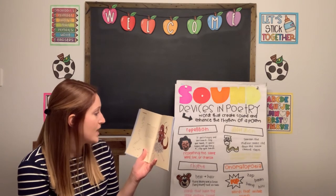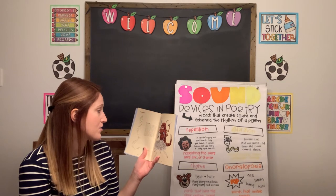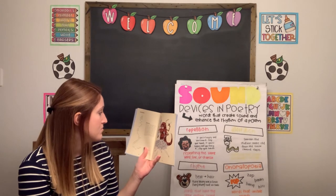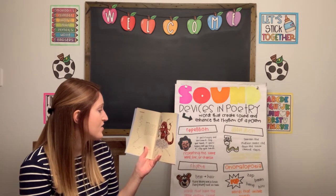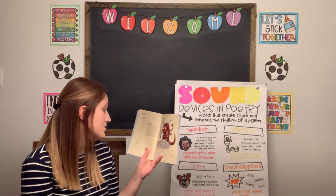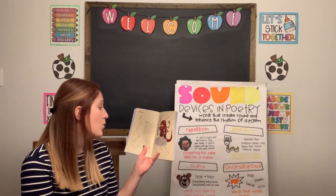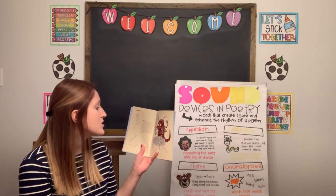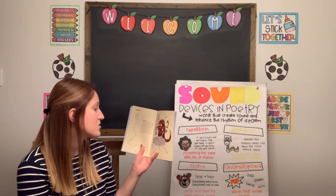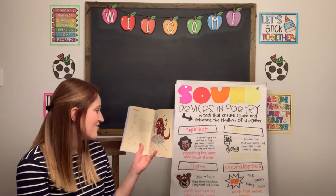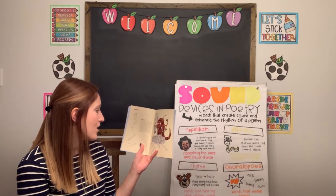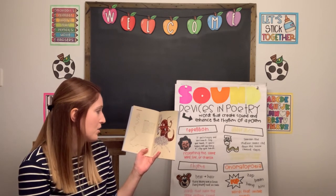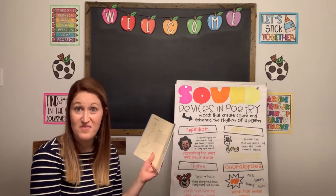Nematodes are food for soil predators. Some springtails slurp them in like spaghetti. Certain fungi attract nematodes and trap them in a noose or on a sticky hyphal thread. It's eat and be eaten in the wild world of soil nematodes.